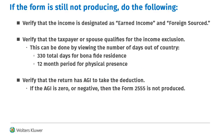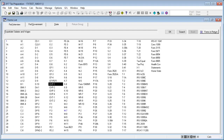If the form is not being produced, do the following: 1. Verify that the income is designated as Earned Income and Foreign Sourced. 2. Verify that the taxpayer or spouse qualifies for the income exclusion. 3. Verify that the return has adjusted gross income to take the deduction.